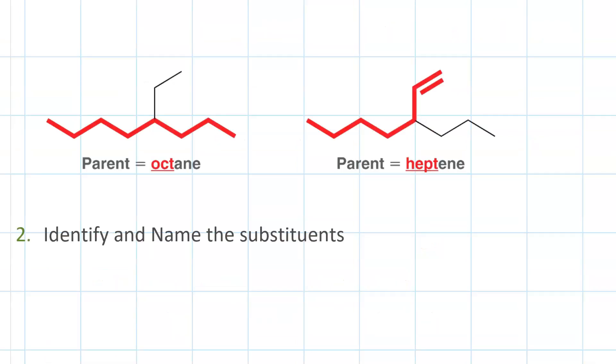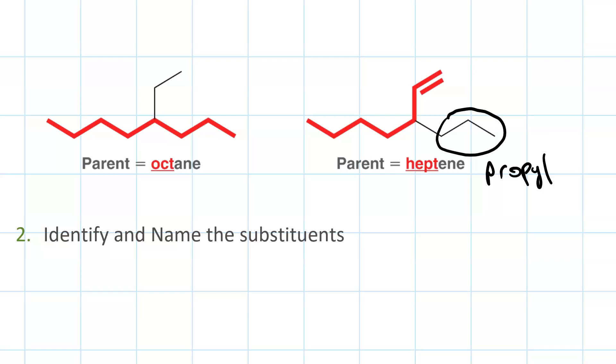Next, we want to identify and name the substituents. So in this case, we have a propyl group. And next we want to talk about locants. So we're going to assign a locant for each substituent. You have to use a prefix if you have more than one of them. But the C=C bond, the double bond takes priority, so we want to give it the lowest locant possible.